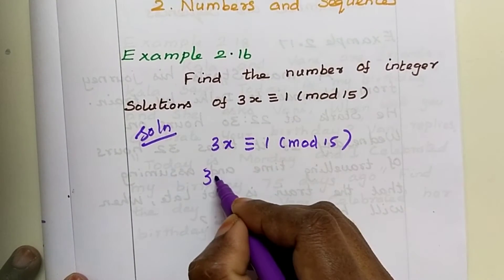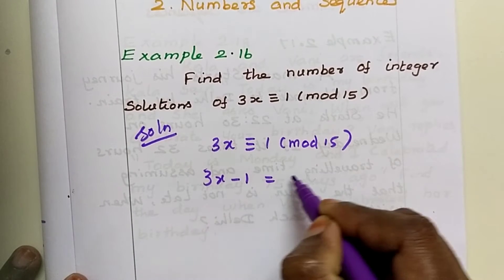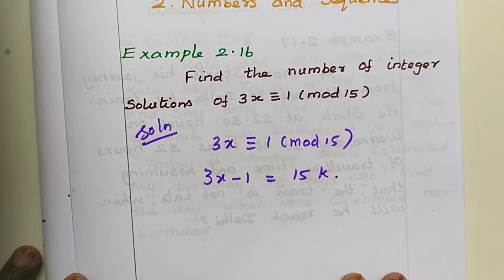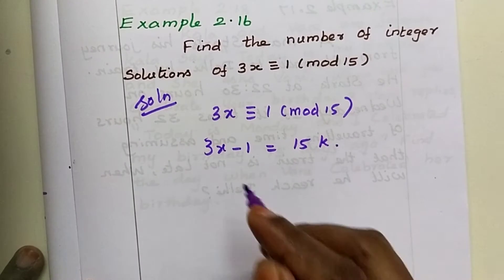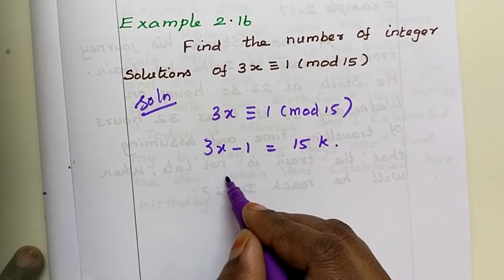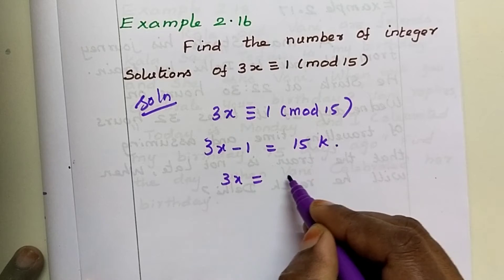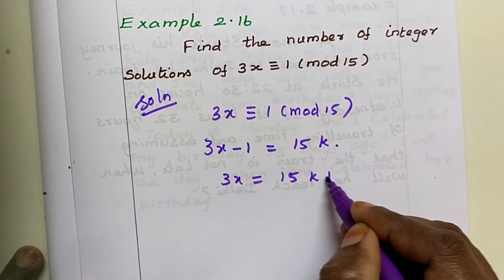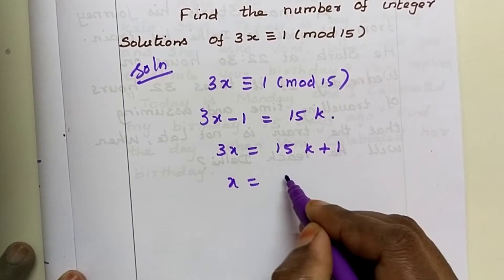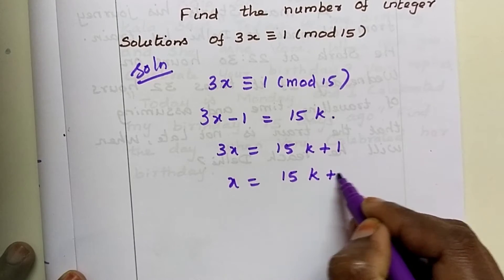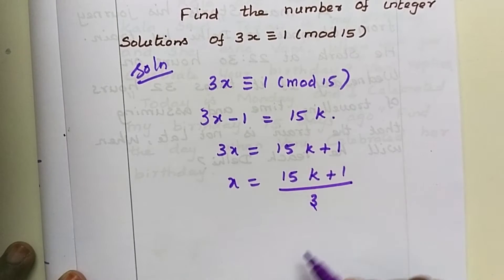So 3x minus 1 equals 15k for some integer k. Now we need to calculate the x value. So 3x equals 15k plus 1.